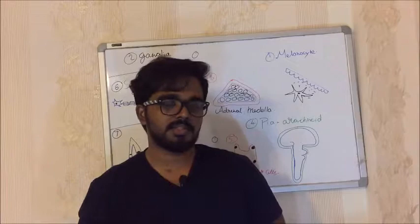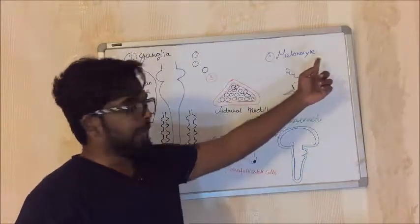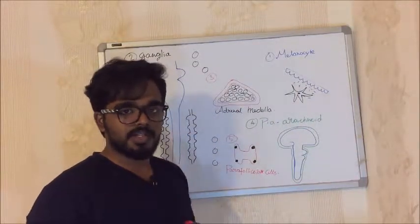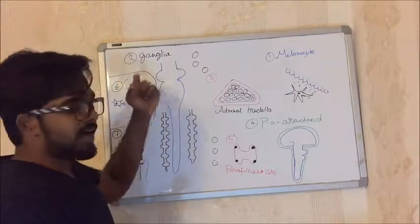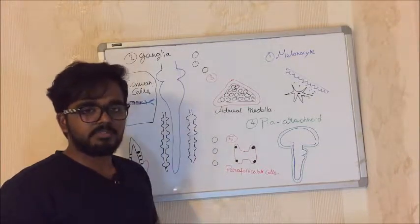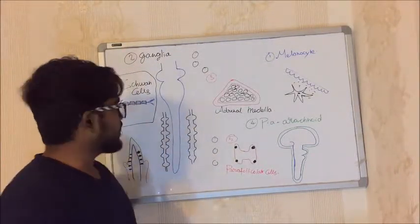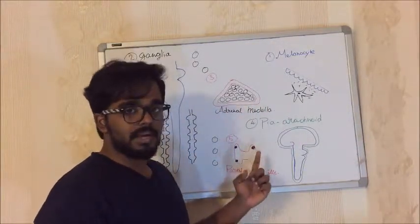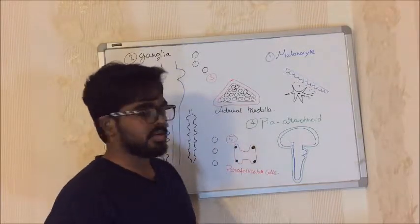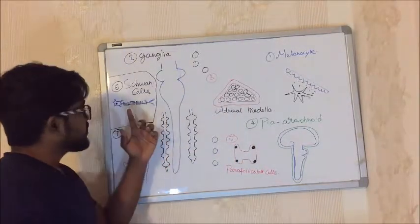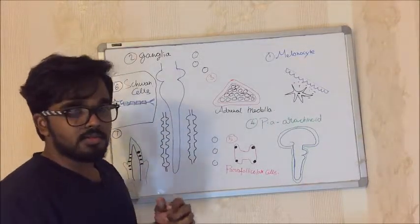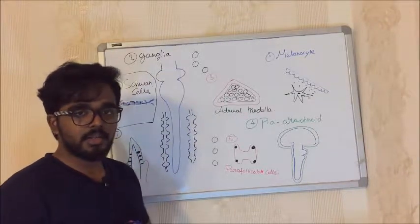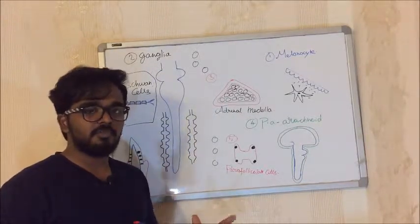To summarize the Neural Crest Cell derivatives: Melanocytes in the epidermis and iris; mesencephalic dopamine cells in the heart region; ganglia including sympathetic, parasympathetic, and visceral ganglia; adrenal medulla; parafollicular cells of the thyroid, which secrete calcitonin; Schwann cells in the peripheral nervous system for myelination. In the central nervous system, myelination is by oligodendrocytes, which are derived from ependymal cells — not neural crest cells.